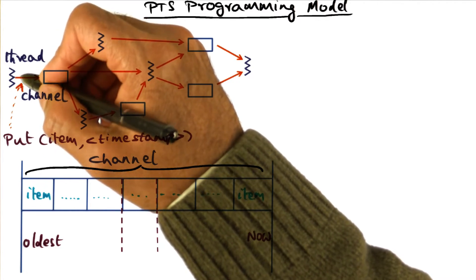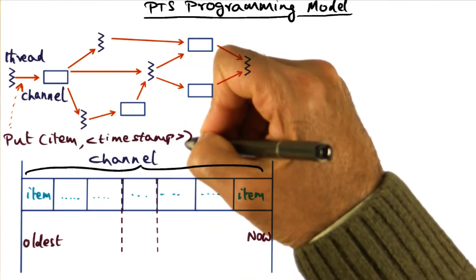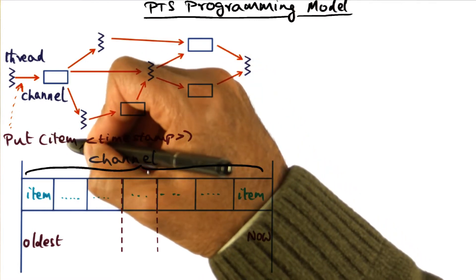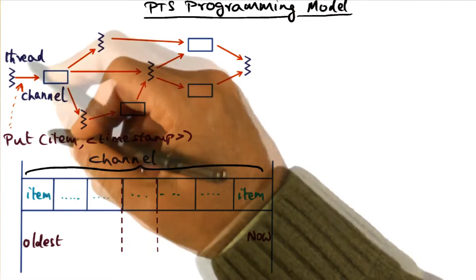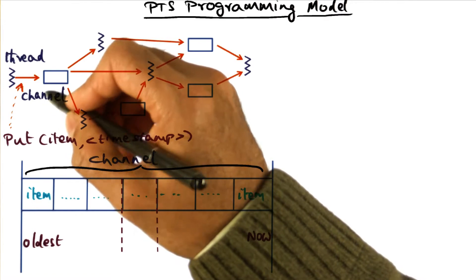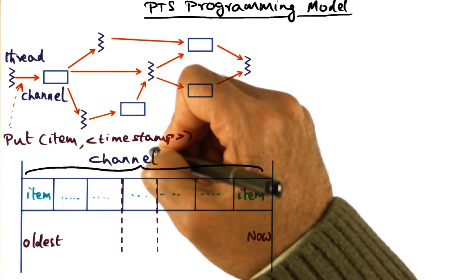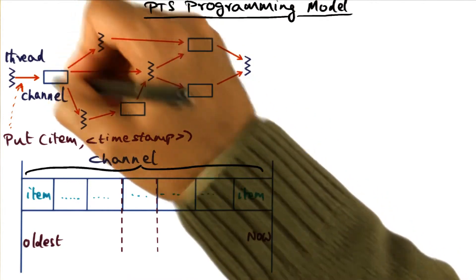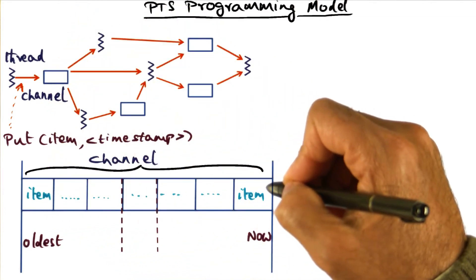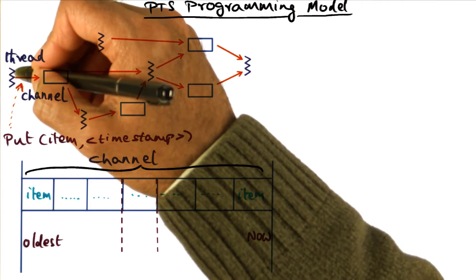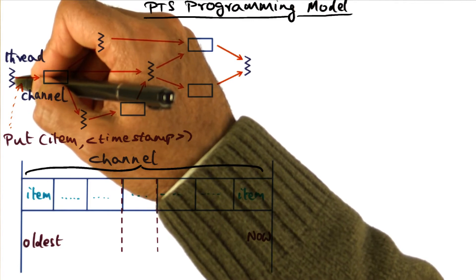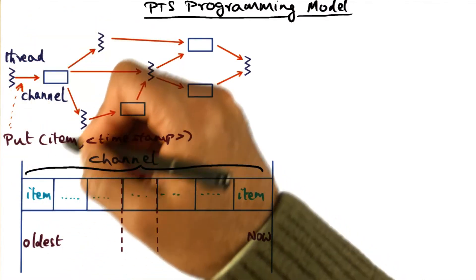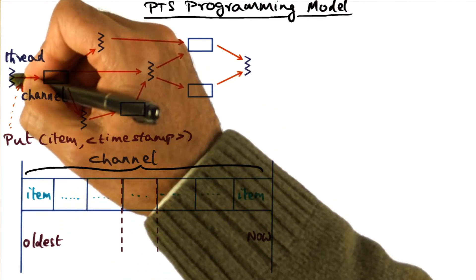A thread that produces data and wants to put it into a channel uses the put item primitive for operating on the channel. The put item takes two arguments: one is the item itself, which is whatever the application decides as the content of the data it wants to put in a channel; and there's a timestamp it can associate with the data it is producing and placing in the channel. So the contents of any given channel show a temporal evolution of data being produced by a particular thread. For example, a thread could be capturing data from a camera, where every item it produces is one frame of image captured from the camera.